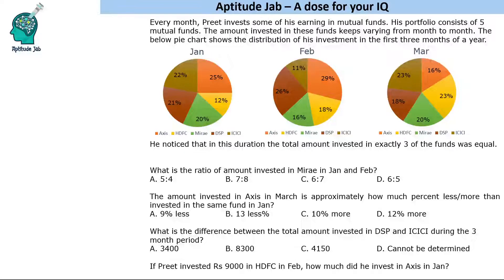Welcome to Aptitude Jab. This is a set based on a pie chart but involves logic. Every month Preet invests some of his earnings in mutual funds. His portfolio consists of five mutual funds: Axis, HDFC, Mirai, DSP, and ICICI. The amount invested in these funds keeps varying from month to month. The pie chart shows the distribution of his investment in the first three months of the year.